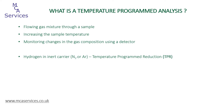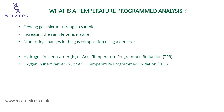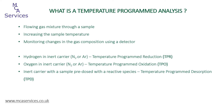Depending on our sample material and the components of the gas mixture, we can perform different temperature programmed analyses. If our sample can be reduced and we have a reducing agent in our gas mixture, for example hydrogen, we can undertake temperature programmed reduction. The opposite — we can oxidise a sample if we have oxygen in the carrier gas. A slightly more complicated analysis is temperature programmed desorption. For this, we pre-absorb a species of our choosing onto a sample, and then we measure the rate at which it comes off — desorbs from the sample — as temperature is increased.